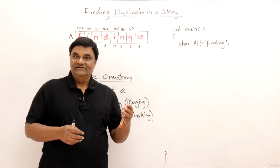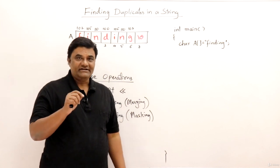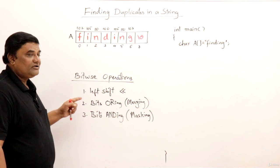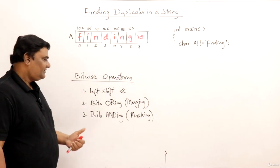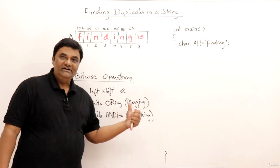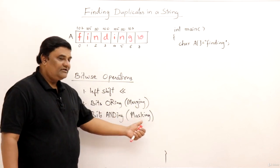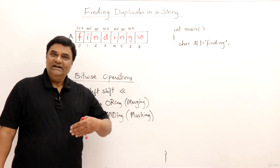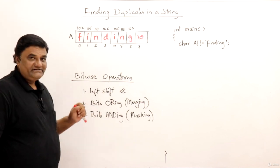Let us revise some concepts before we find the duplicate elements in a string. The concepts we should know are bitwise operations - specifically left shift, bitwise OR which is also called merging, and bitwise AND which is also called masking. We should know these things, then we will see how to find duplicates.